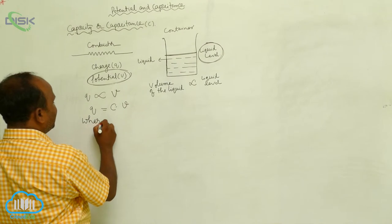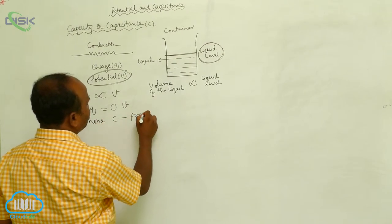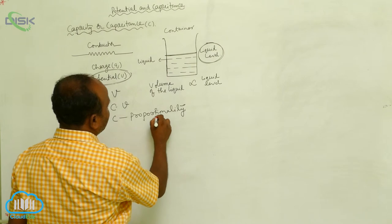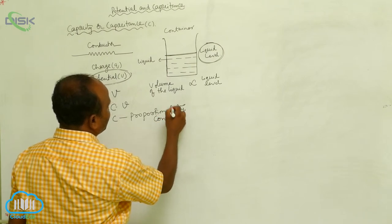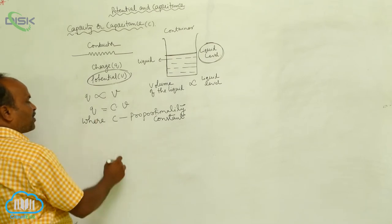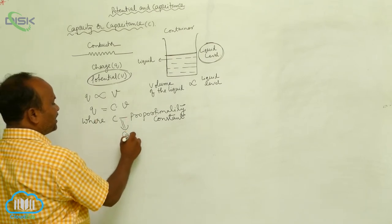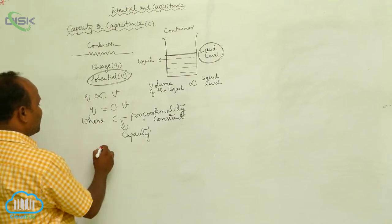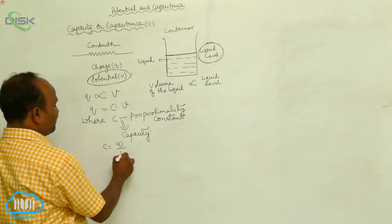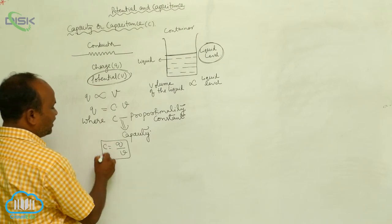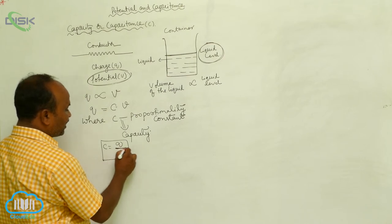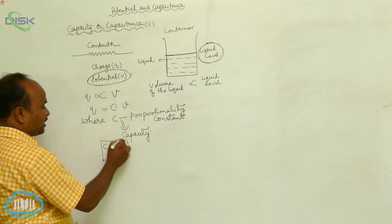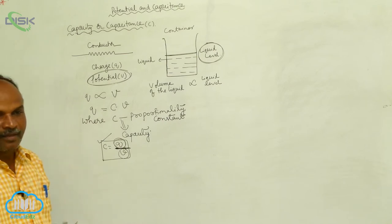Here C is the proportionality constant. This proportionality constant is called capacity. Therefore, C equals Q divided by V. The ratio between the charge on the conductor and its potential is called capacity.